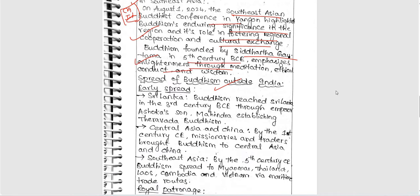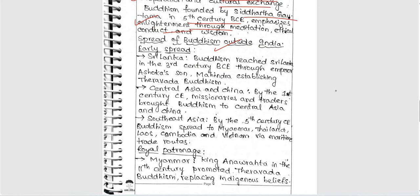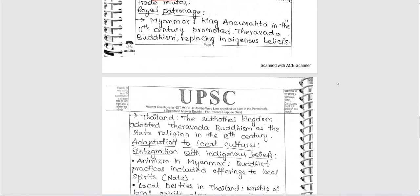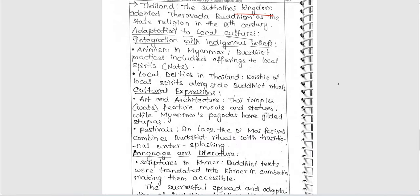For the spread of Buddhism outside India, she started with early spread: Sri Lanka — Buddhism reached Sri Lanka in the third century, with Mahindra establishing Theravada Buddhism. Central Asia and China — by the first century CE, missionaries and traders brought Buddhism to Central Asia and China. Southeast Asia — spread in the fifth century to Myanmar, Thailand, Laos, Cambodia, Vietnam through maritime routes. Myanmar King Anawrahta in the 11th century promoted Theravada Buddhism, replacing indigenous beliefs. Thailand's Sukhothai Kingdom adopted Theravada Buddhism as the state religion in the 13th century.